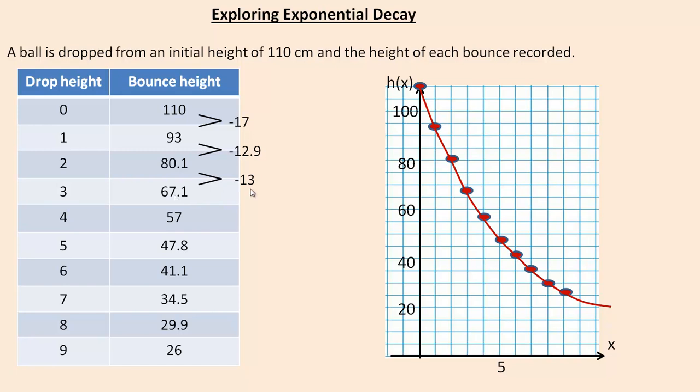And so we can now take a look at the differences. The first differences are not all the same. Actually, these are fairly close, but they're certainly not the same. It went down 17, then down 12.9, and then down 13. So we know it isn't linear.